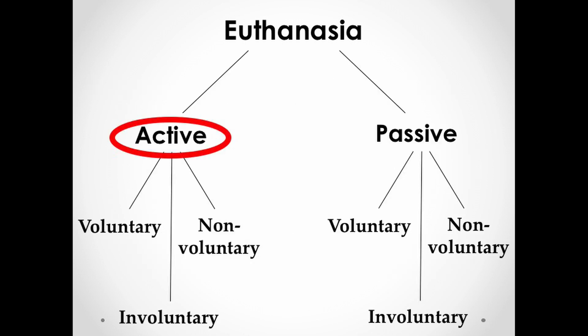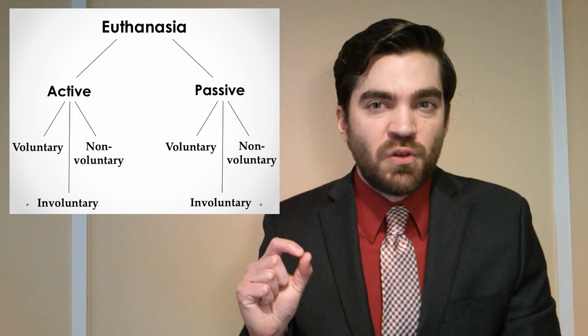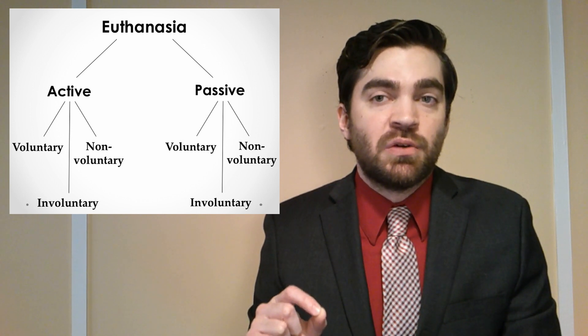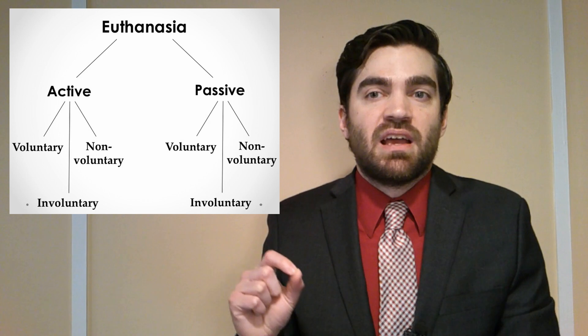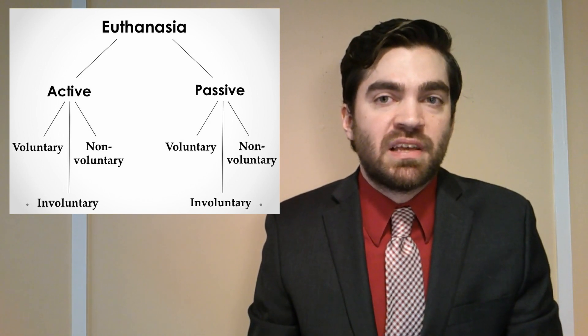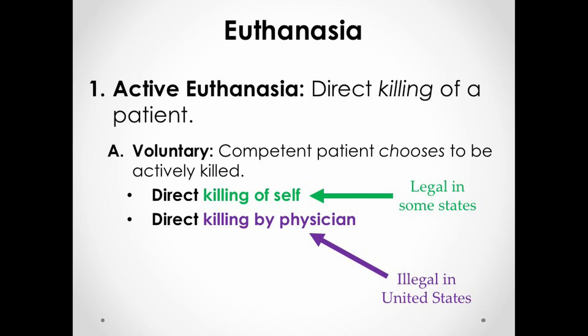Moving up a step: active euthanasia involves direct killing, whereas passive is just allowing a patient to die. It's only one very specific kind of active euthanasia that's currently legal in the US — that's when a patient themselves ingests a lethal prescription given to them by their physician. Physicians cannot cause patient death directly; they can't kill patients in the United States.